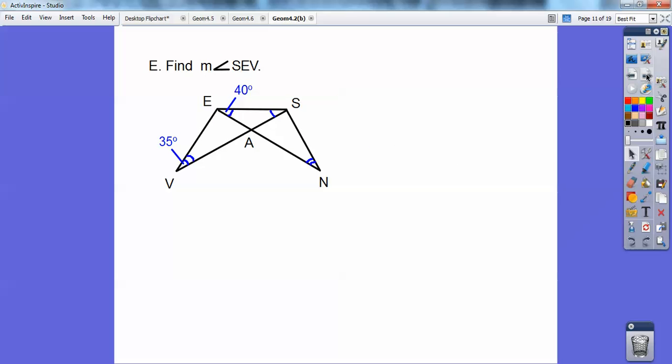Alright, so this one looks kind of confusing. Typical geometry problem here. They combine a bunch of stuff together and always, always, always separate those triangles up. It makes it look a lot easier. Notice two marks goes down here with V. Two marks goes down here with N. And this mark right here is angle S, E, N. So S, E, N is right there. So that's that 40 right there.